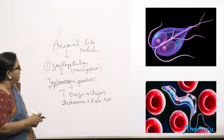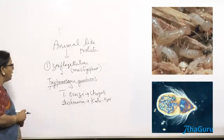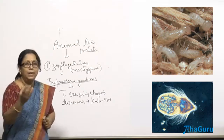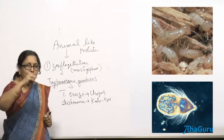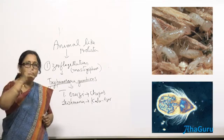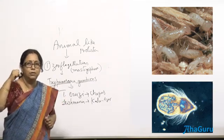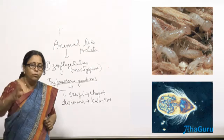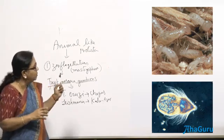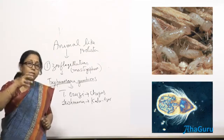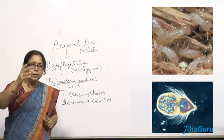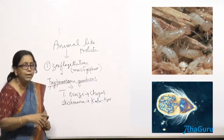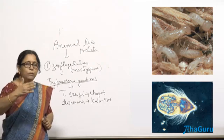There is one interesting zooflagellate called Trichonympha. It lives not in human beings but inside the body of termites. Termites eat wood, but they cannot digest wood because they do not have the enzyme cellulase. What they do is they harbor Trichonympha in their body. Trichonympha is capable of digesting the cellulose.